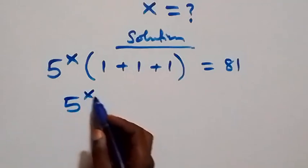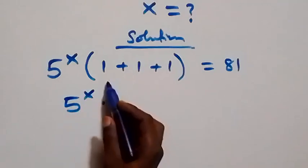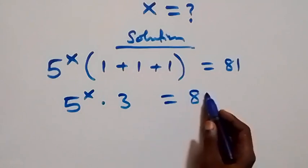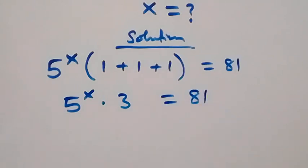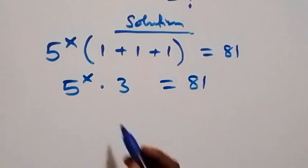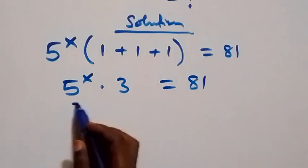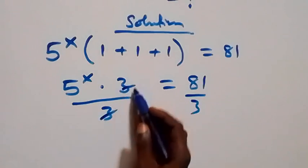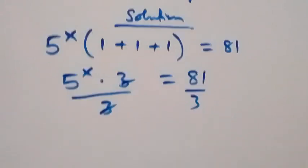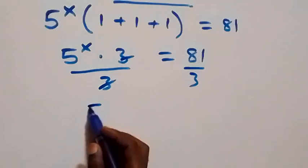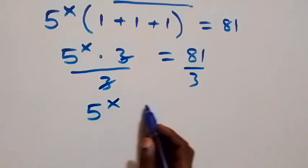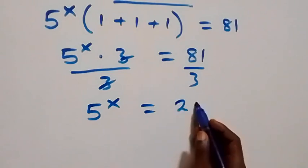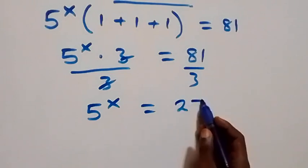This is the same as 5 raised to power x times 3, which equals 81. The next step is to divide both sides by 3. The 3 cancels out and we have 5 raised to power x equals 81 divided by 3, which gives us 27.